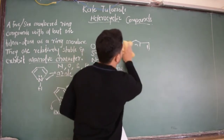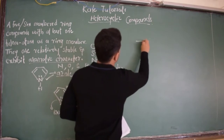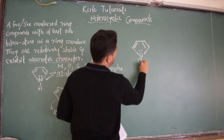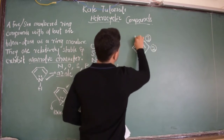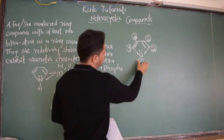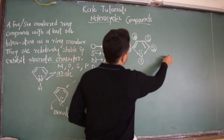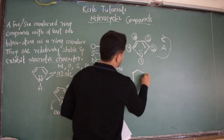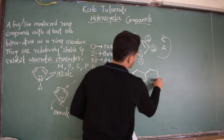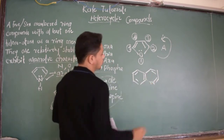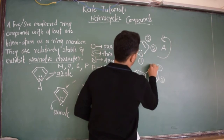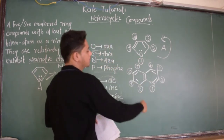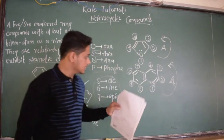You should also know how to number these compounds. If I take furan — oxole — the first number should be given to the hetero atom, and we number in the anticlockwise direction. For quinoline, the first number is given to the hetero atom nitrogen, then going anticlockwise: 2, 3, 4; then continuing: 5, 6, 7, 8. This is the numbering of quinoline in anticlockwise direction.